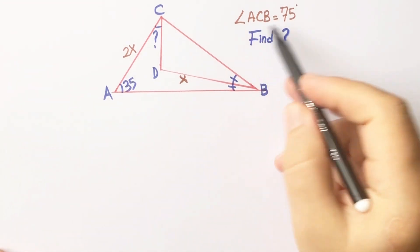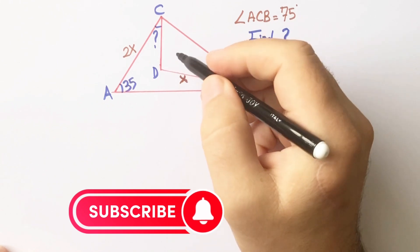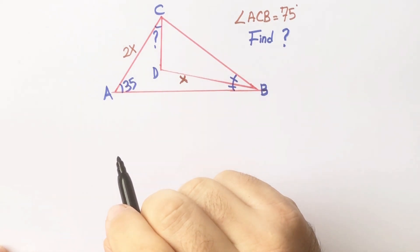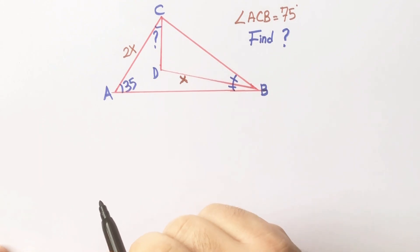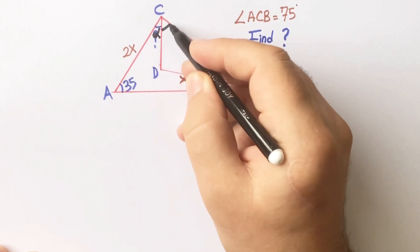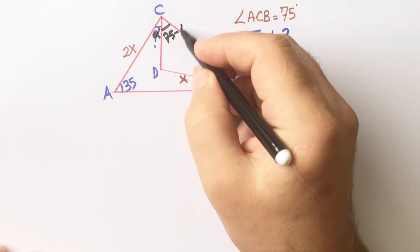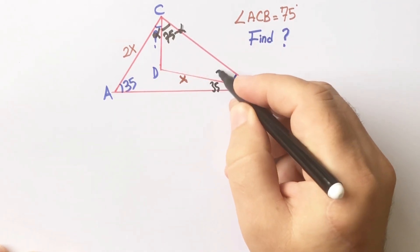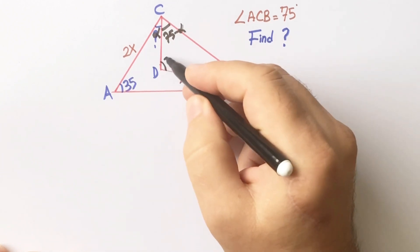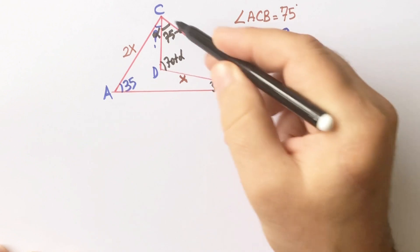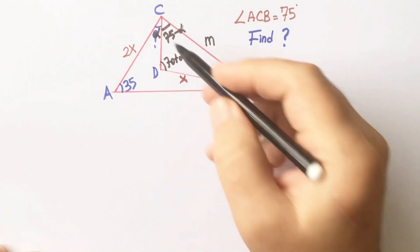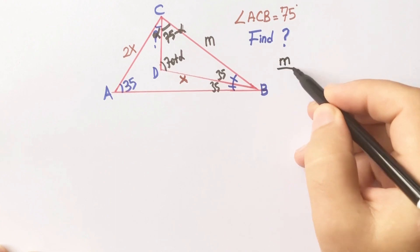In this video we will calculate the missing angle. Here is 75 degrees and the ABC angle must be 70 degrees. Let's call this angle alpha. Here must be 75 minus alpha, these are 35 degrees, and here must be 70 plus alpha. Let's call this length M units.